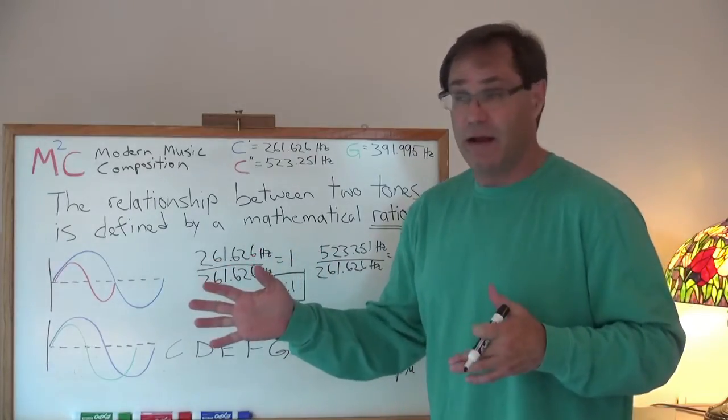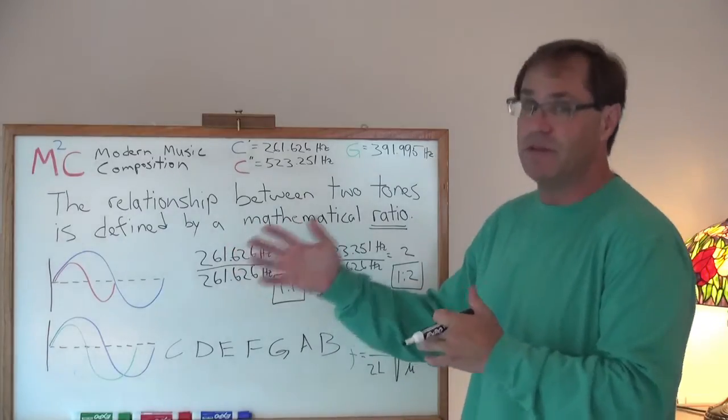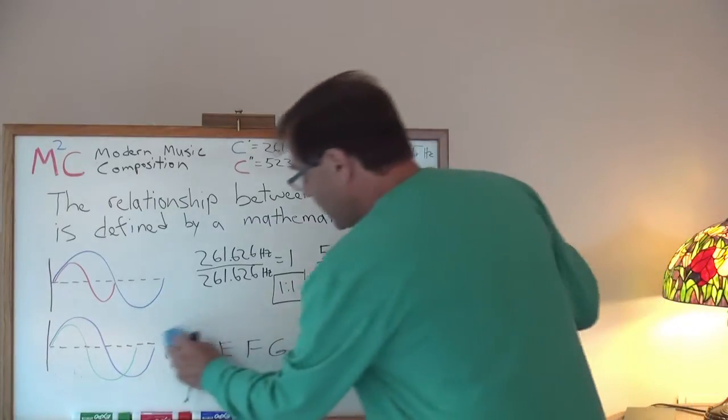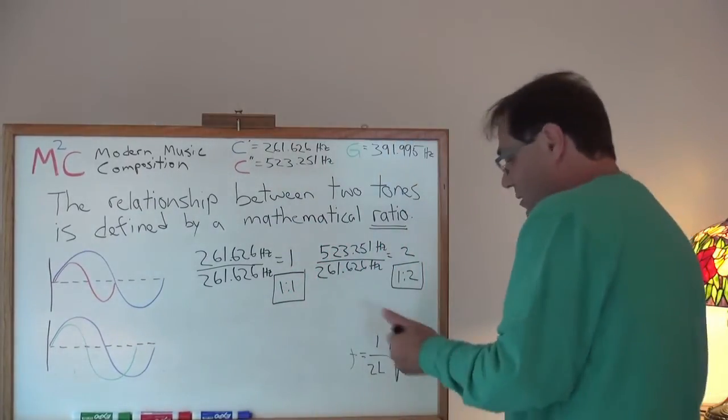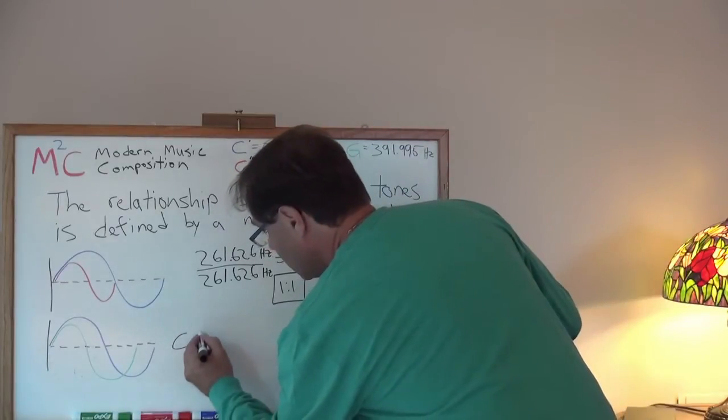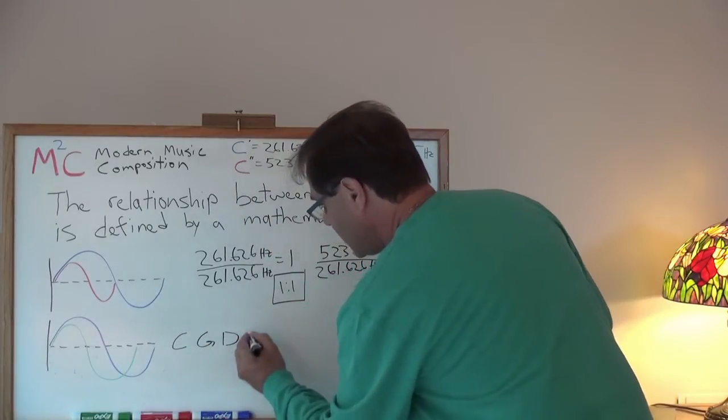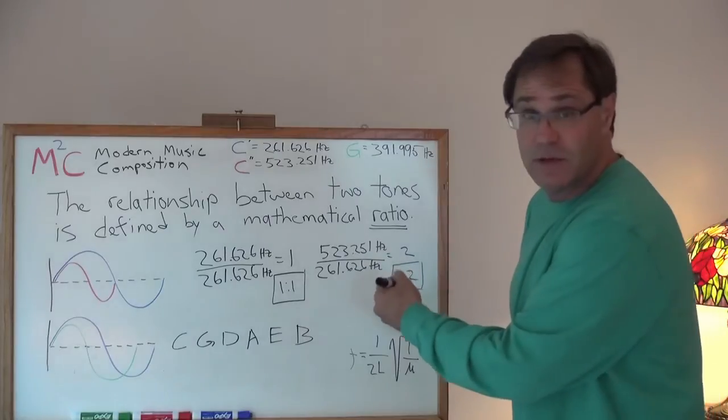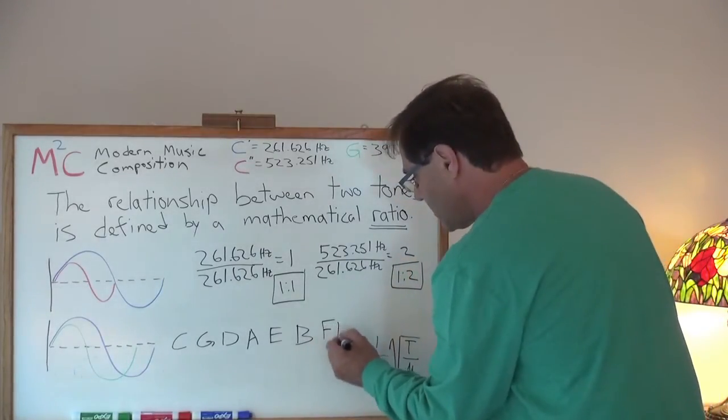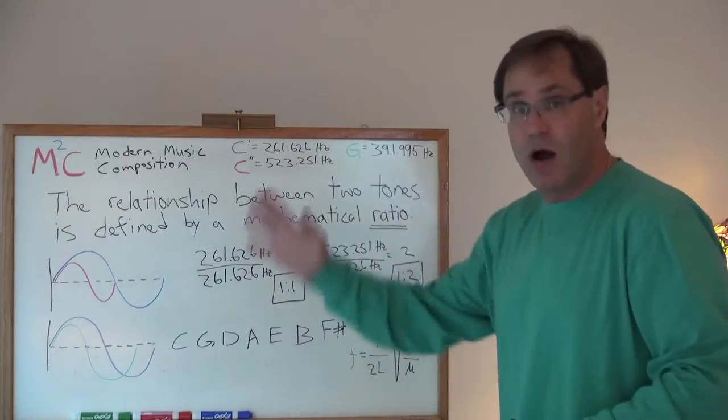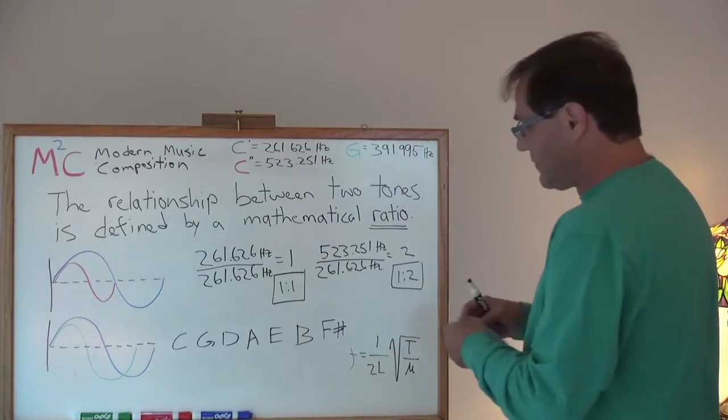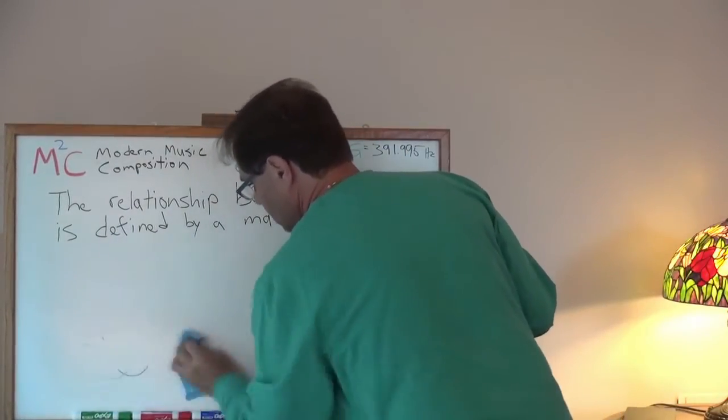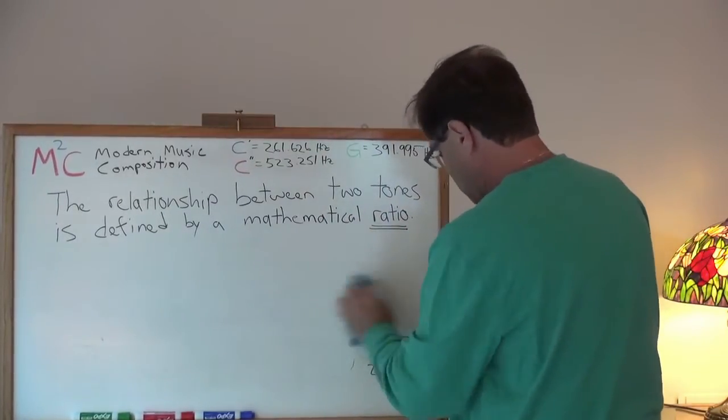Now, what else do we get out of this? We've actually derived the circle of fifths in this process. How have we done that? By the natural scale. Remember, we had C, G, D, A, E, B. Now, I will continue to go forward with F sharp. At this point, let me draw the circle itself. I'm going to get rid of some of this information here.